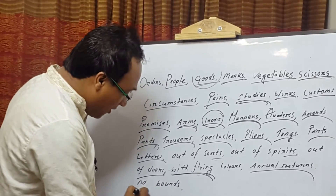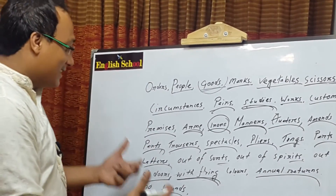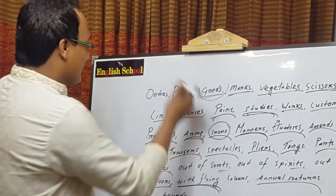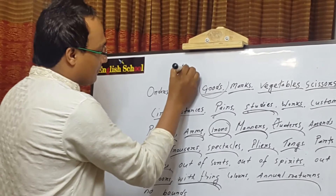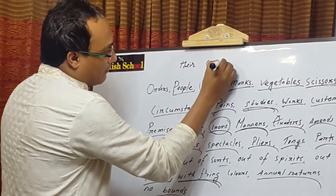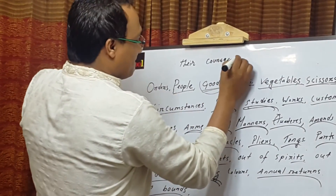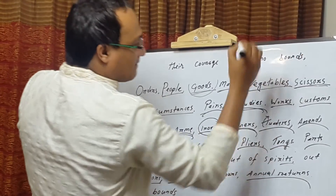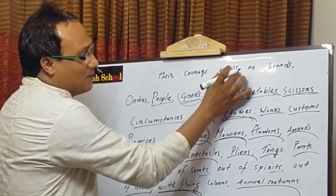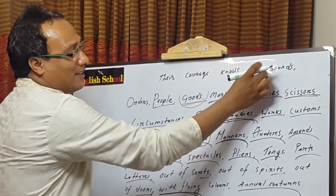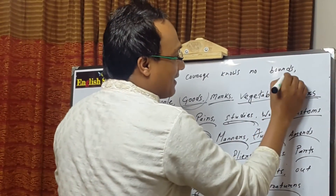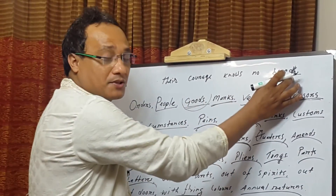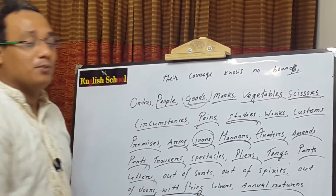The last example in this video is 'no bounds.' We sometimes say 'Their courage knows no bound,' but that is a mistake. It must be 'bounds.' So the correct sentence is: 'Their courage knows no bounds.' Because 'bounds' is a plural noun, we must always use the plural form.